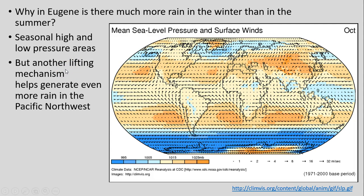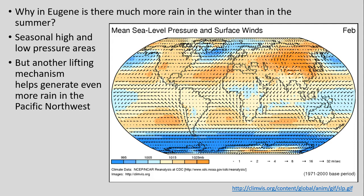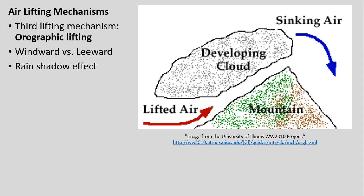Another lifting mechanism also important in generating even more rain in the Pacific Northwest is orographic lifting, which we'll continue to discuss in another lesson. Here, 'oros' refers to mountains — air moving toward a mountain simply can't pass through at the same elevation but must go over it, so the air is lifted. As it goes up the mountain it cools, leading to condensation and precipitation on the windward side. When the air reaches the peak and starts moving down the leeward side, it adiabatically warms, generating what we term the rain shadow effect.